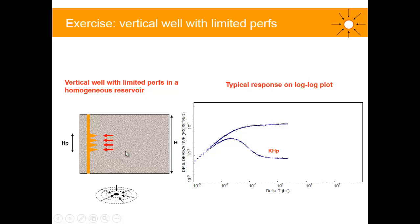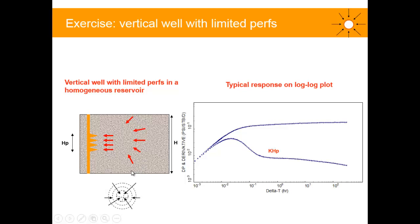Further away from the well, we get the contribution of the non-perforated layer — the rest of the reservoir. What you'd expect to see is spherical flow: a three-dimensional flow towards this limited perforation. This occurs at larger delta T, and spherical flow is represented in the ideal case by a negative half-unit slope straight line on the derivative plot.